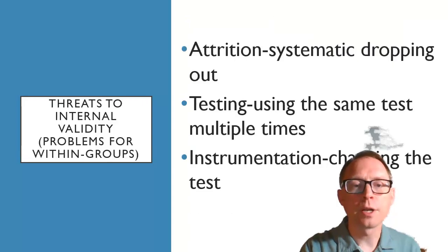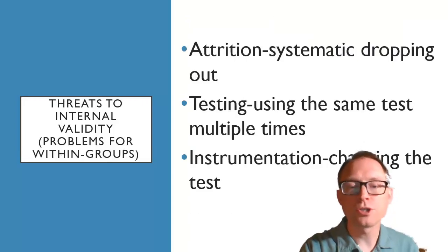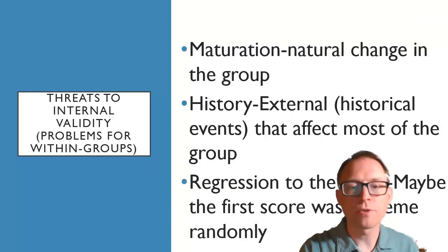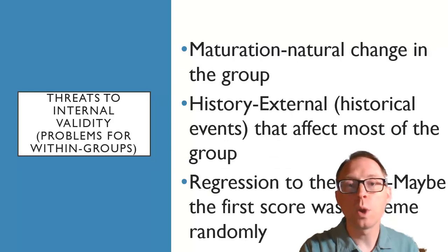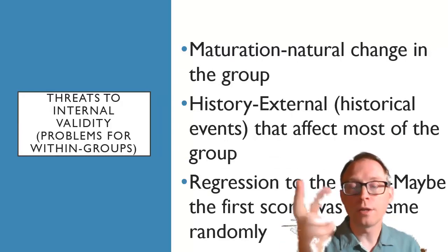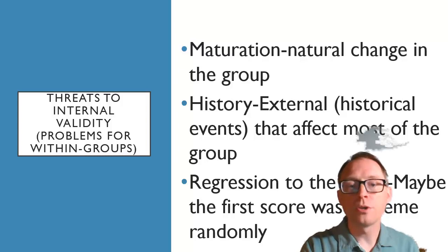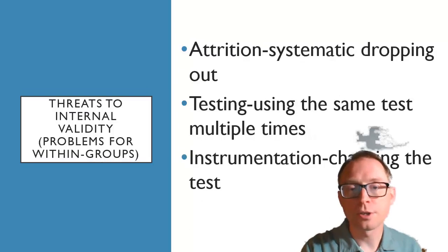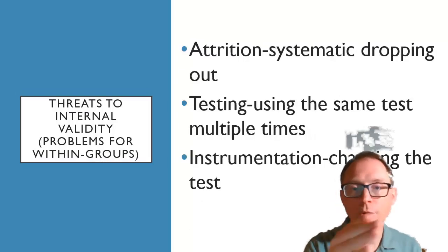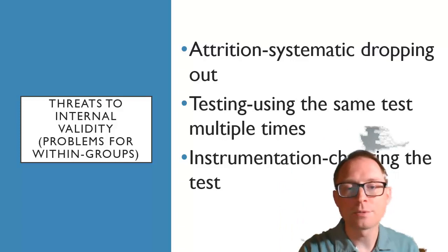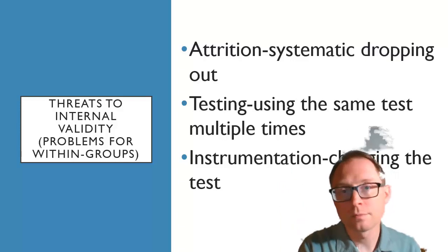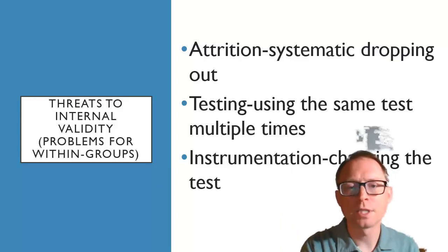For other threats like attrition, testing effects, and instrumentation, most of these can be taken care of when you vary the order in which you're doing the measurements, though sometimes that's not easy to do. Another way is cross-sectional designs — just don't do it over time. Make sure you do it at the same time and have two separate groups, like in an independent groups design. Also make sure you do the testing procedure in exactly the correct form.